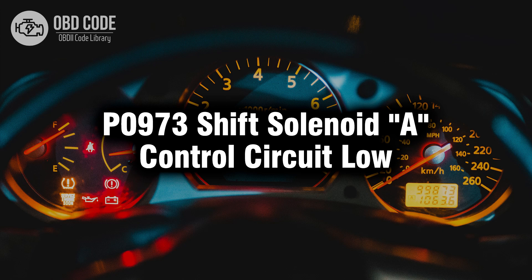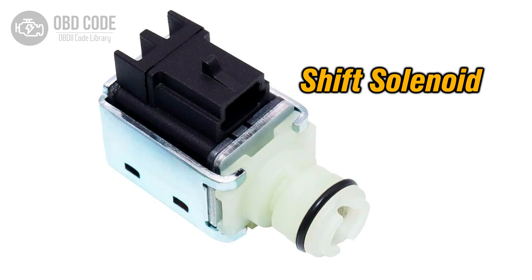Welcome. In this video we will talk about code P0973, its symptoms, causes and possible solutions. P0973 is a diagnostic trouble code that indicates an issue with the A-shift solenoid control circuit, typically due to low voltage.